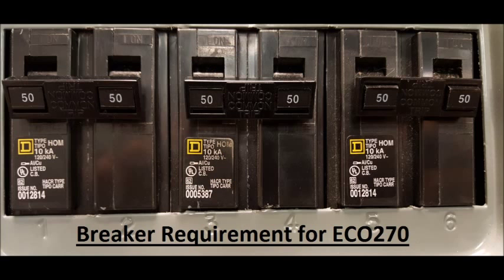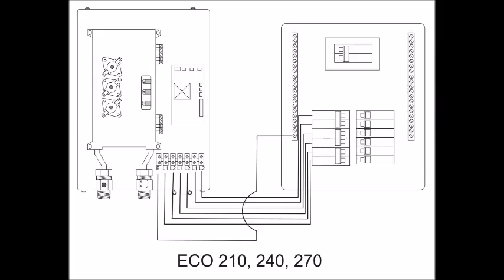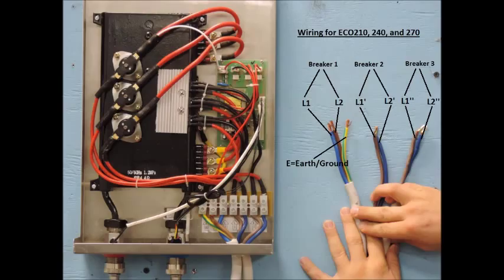Lastly, our ECO 270 unit runs on three 220 volt double pole 50 amp breakers, meaning the unit has access to 150 amps. This unit will wire up the same as the ECO 210 and 240, only it will be using a breaker with a higher amp limit.